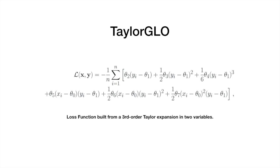One loss function in particular, named the Baikal loss, was able to outperform the cross-entropy loss on different datasets. This past work accomplished this by representing loss functions as trees, inspired by genetic programming. And while trees can represent any function, most functions are not actually usable loss functions.